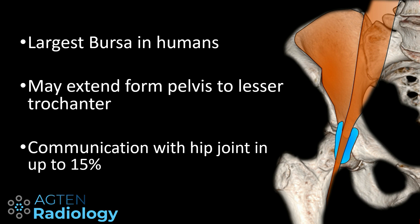The iliopsoas bursa is the largest bursa in humans. It can be quite large — up to seven or even more centimeters — and it might extend all the way into the pelvis and down to the lesser trochanter. Interestingly, there can be a communication with the hip joint in up to 15% of patients, and the more the joint is degenerated, the more likely this communication is present.